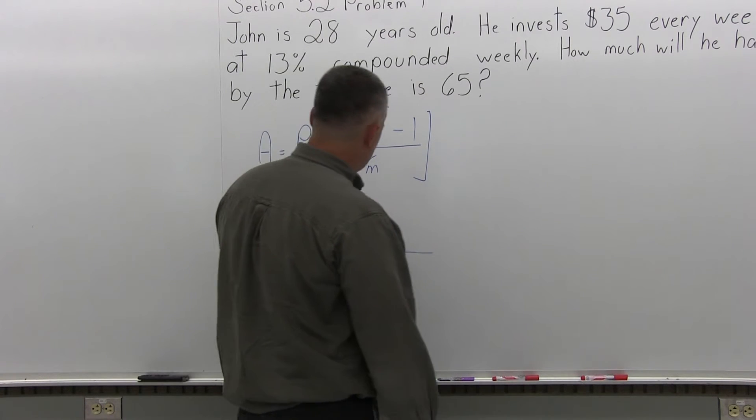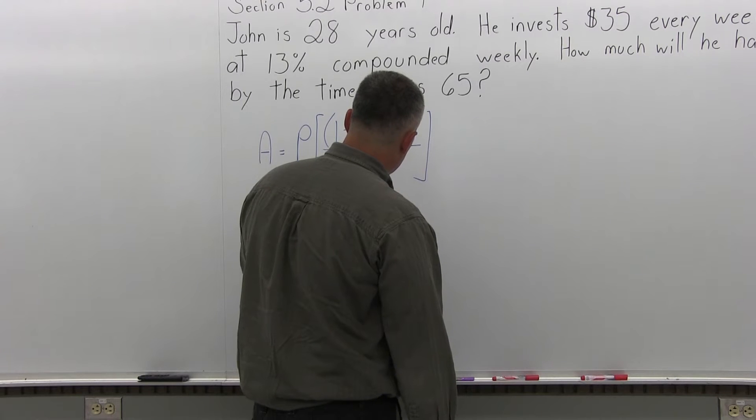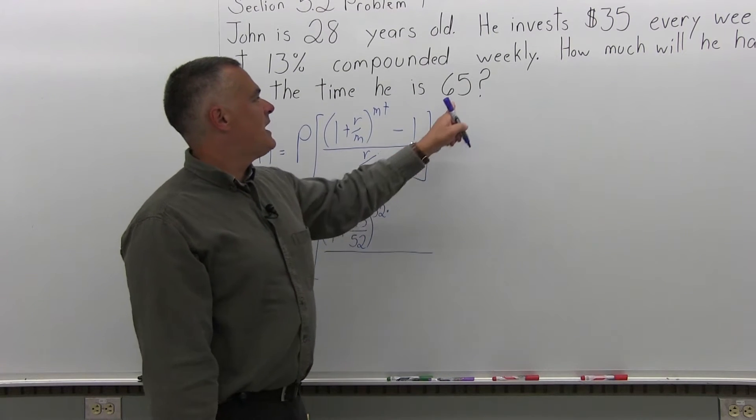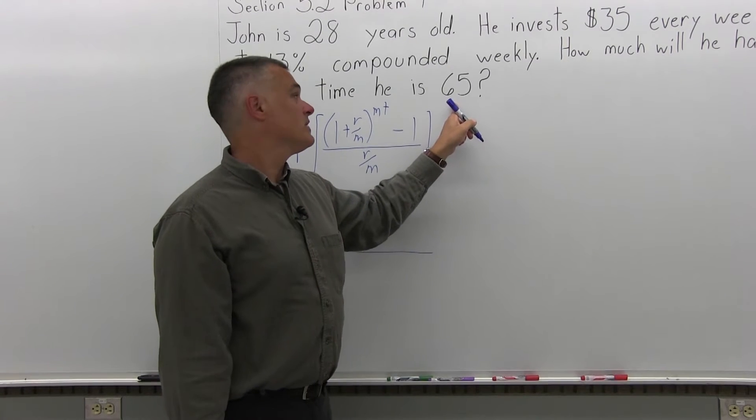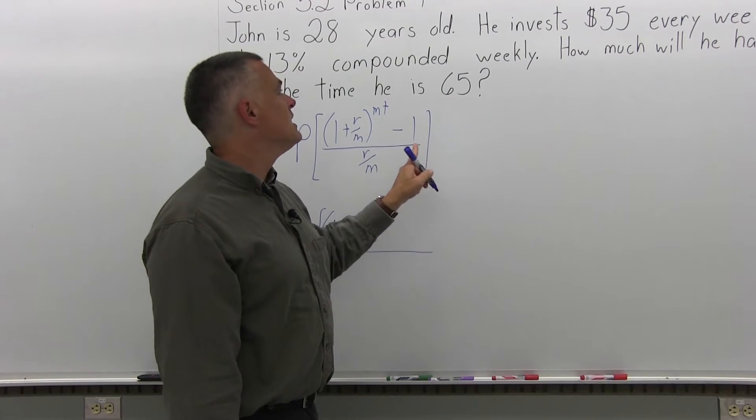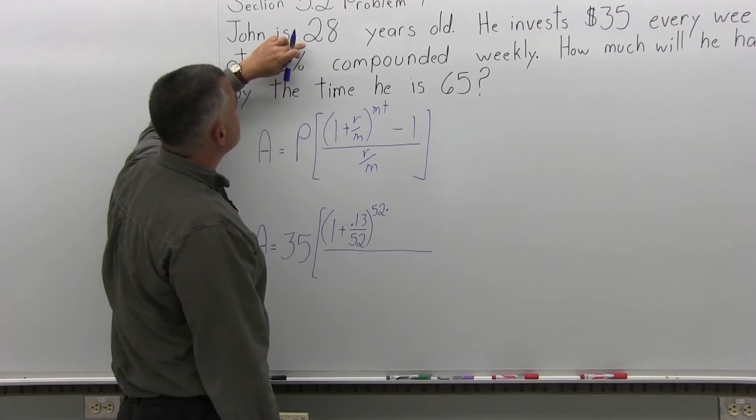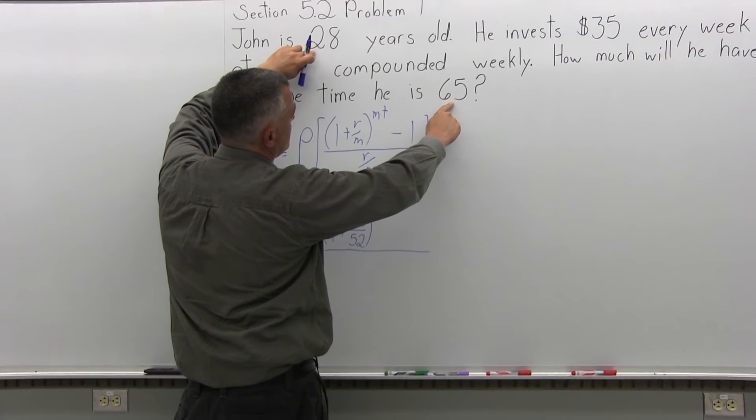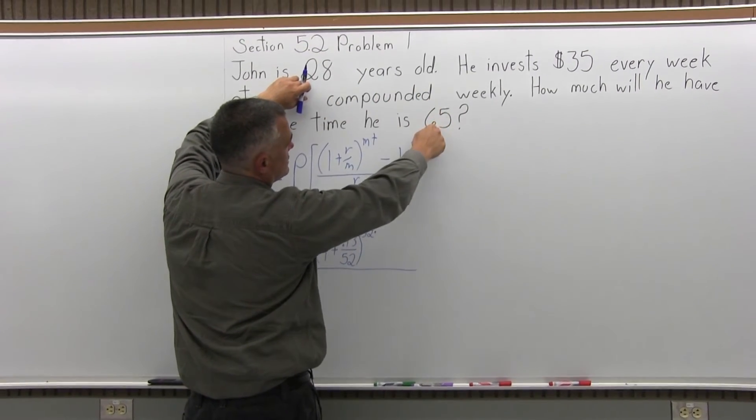m is 52 for number of times compounded per year. And for t, a lot of people would put 65, but that's wrong, because you're not saving for all 65 years, because John doesn't start saving until he's 28. So from age 28 to age 65 is a 37 year span.